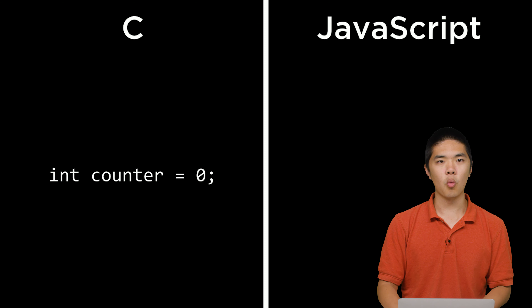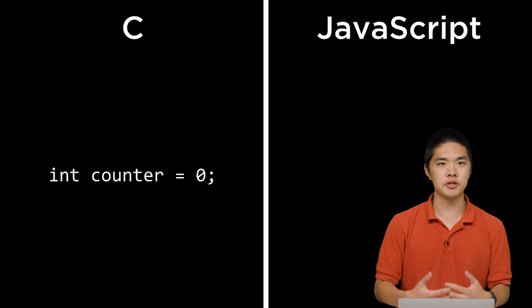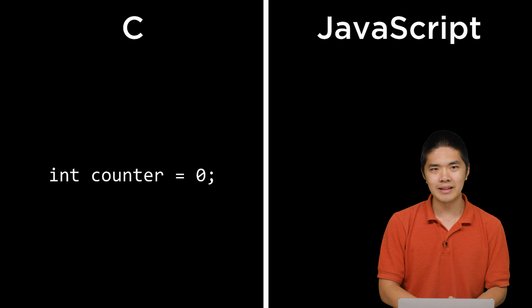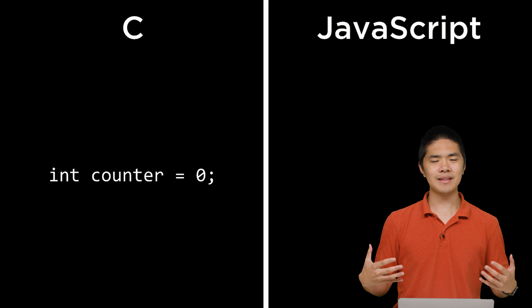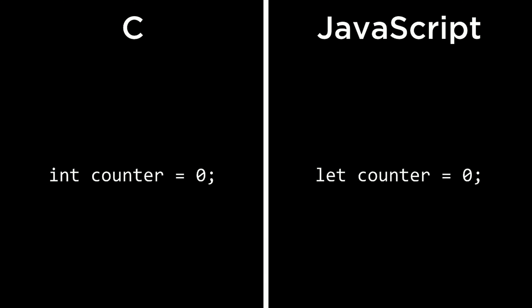In C, if you wanted to declare a variable that was an integer, you might have had code like: int counter = 0. Counter is the name of the variable, and int is the type. In JavaScript, we would express the same idea using: let counter = 0. Very similar syntax — the only difference is that we've replaced int with just the keyword let. JavaScript doesn't require us to specify the type for every variable; it just knows when it sees a 0 that it's an integer.